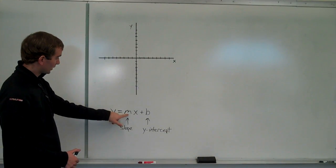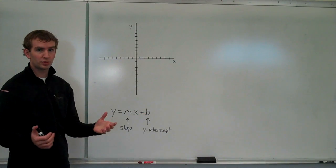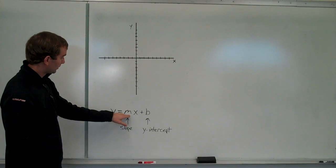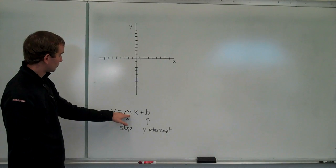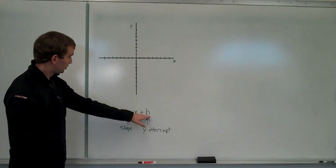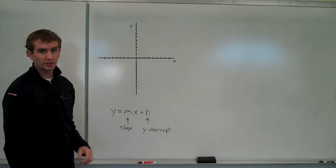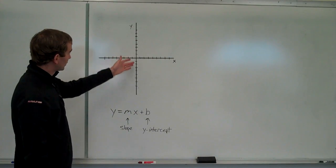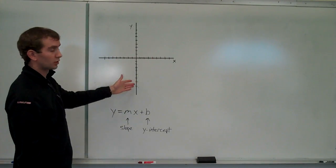Because we have the letters m and b which normally would be filled by numbers if we had an equation of a line. But in this case, m is the number that's going to represent the slope. Anytime you see m, think slope. And b is going to be our y intercept. Now what are those? The y intercept for starters is just where our line crosses the y axis, the vertical axis.